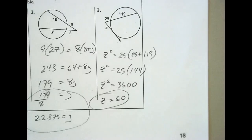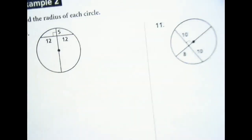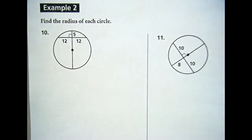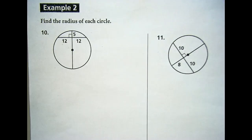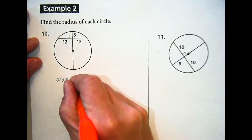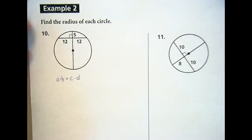Let's take a look at example two — we're going to do two problems together. There's number 10 and 11: find the radius, a little tougher. Any thoughts on how we're going to do this one? Jordan: 'You would use the formula for the two intersecting chords to get that other section of the diameter, and then divide and add.' Okay, so a times b equals c times d.